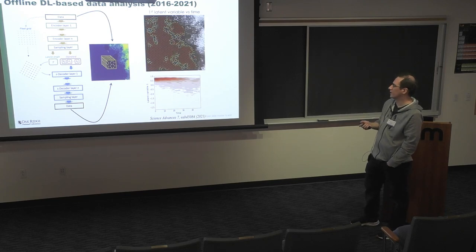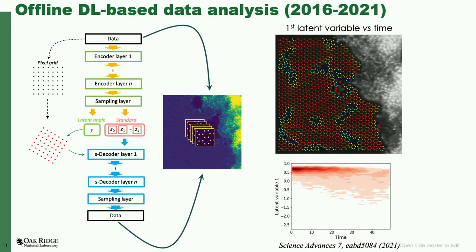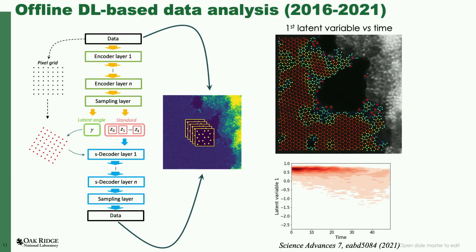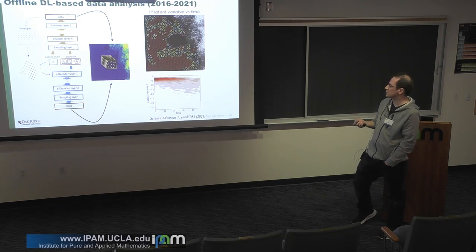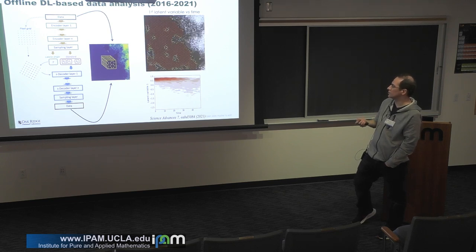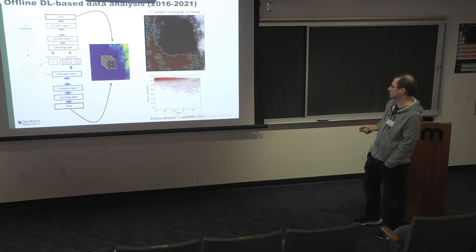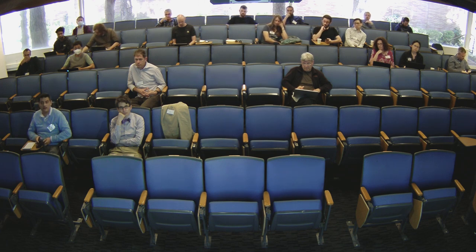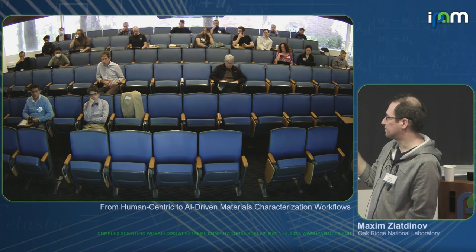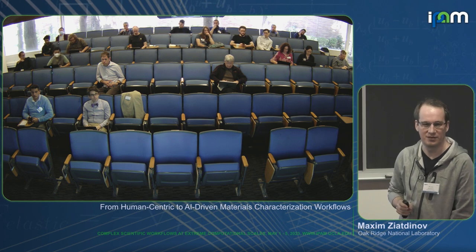Speaking of latent representation learning, we had a lot of fun with unsupervised learning. We have movies showing atomic transformations over a relatively large field of view. Can we compress those entire movies into just one or two latent variables and connect them to specific physics? It turns out yes, it's possible. The trick was to condition your model — in this case a variational autoencoder — on something you already know, which was invariance to rotations, to help it discover something we don't necessarily know. In this case the latent parameter was connected to an order-disorder parameter. This is graphene, and what happens here is that you image it with the electron beam but you also modify it with the electron beam — it's sort of melting under electron beam irradiation.